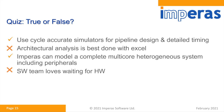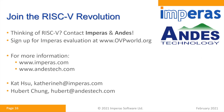The first quiz answer: use cycle-accurate simulators for pipeline design and detailed timing; architectural analysis is best done with Excel — yes, but only if your design is simple. In today's complexity, please contact Empiric for architectural analysis. Yes, Empiric can model a complete multi-core heterogeneous system including peripherals. Software teams love waiting for hardware — I'm going to vote no on that one. That completes my part of the presentation — if you're thinking of RISC-V, please contact Empiric and AndesTech.